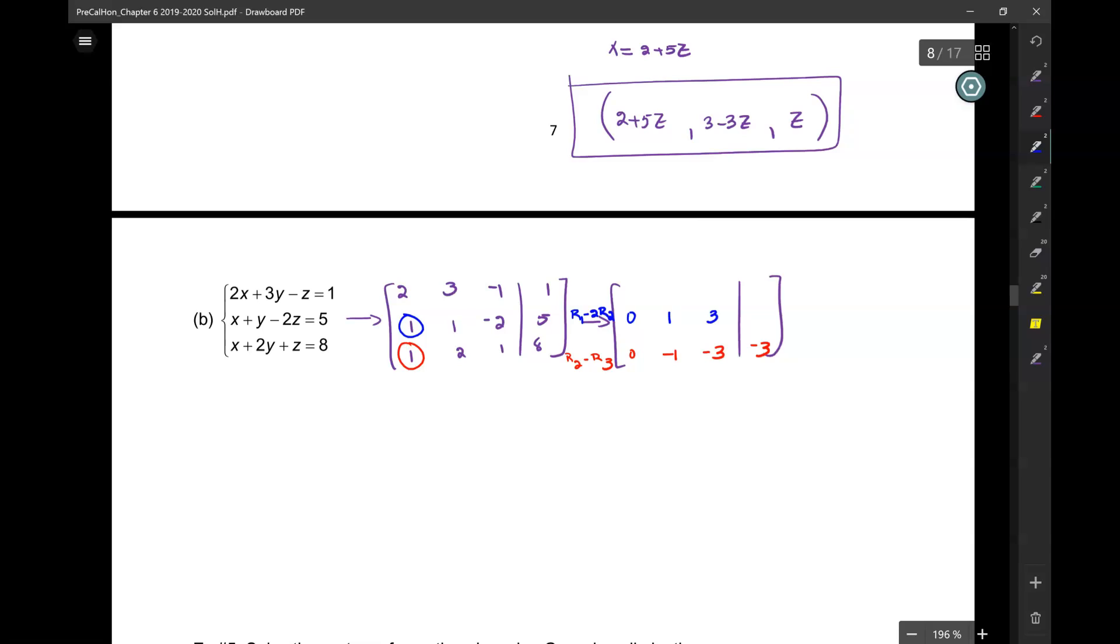Wait, what was the thing that you did? And then negative 9. What is it? Row 1 minus 2, row 2. The last one will remain unchanged.